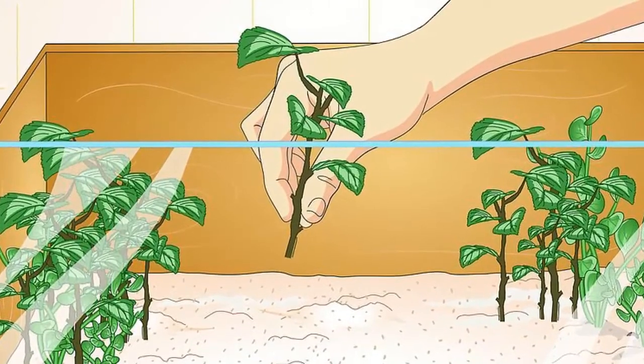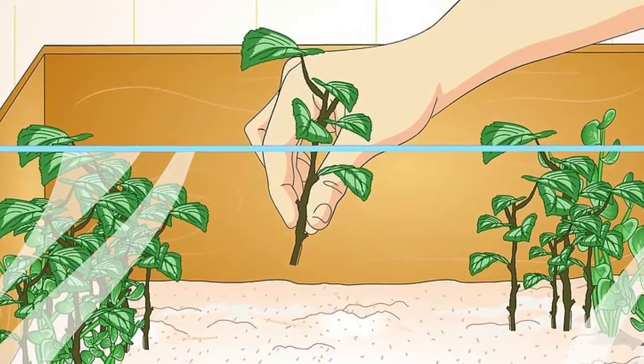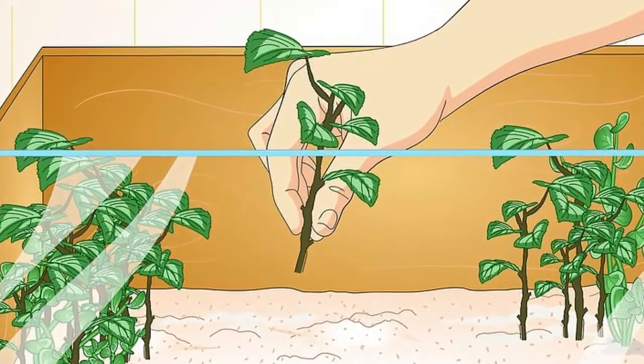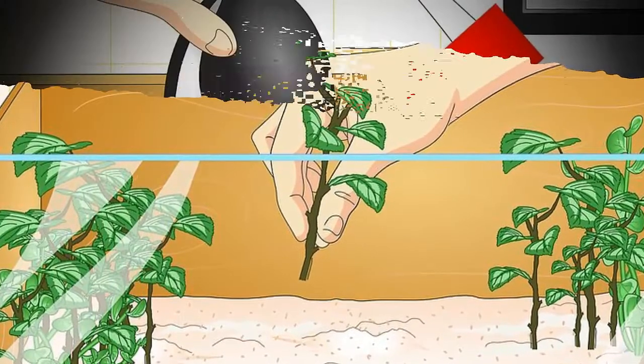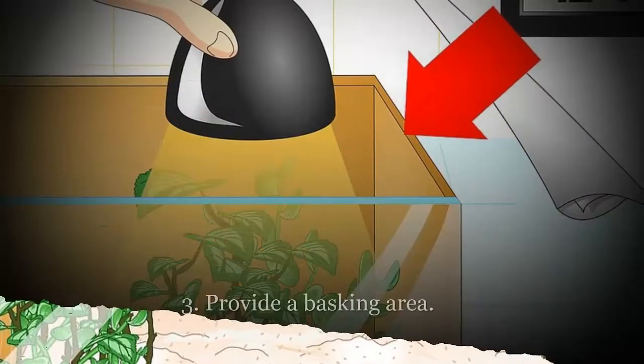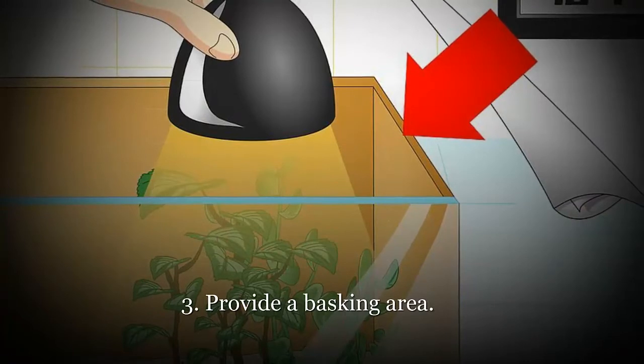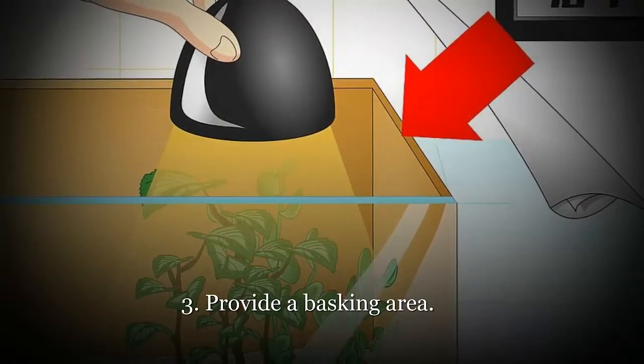You should add some extra branches propped up against the side of the tank. These are great for climbing on. You can buy prepared branches in your pet store. Be wary of bringing in branches from outside, as these may have parasites.